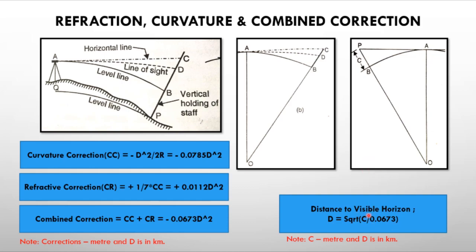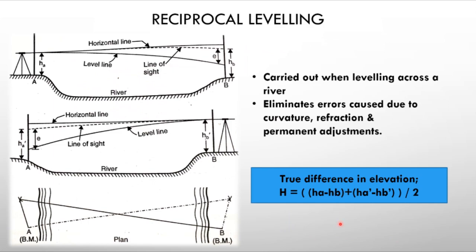Reciprocal leveling is used when there is an obstacle such as a river between two points. Observations are taken from both sides of the river. Taking the average of both readings eliminates errors due to curvature, refraction, and permanent adjustments automatically. The true difference in elevation is the average of the two observed differences.